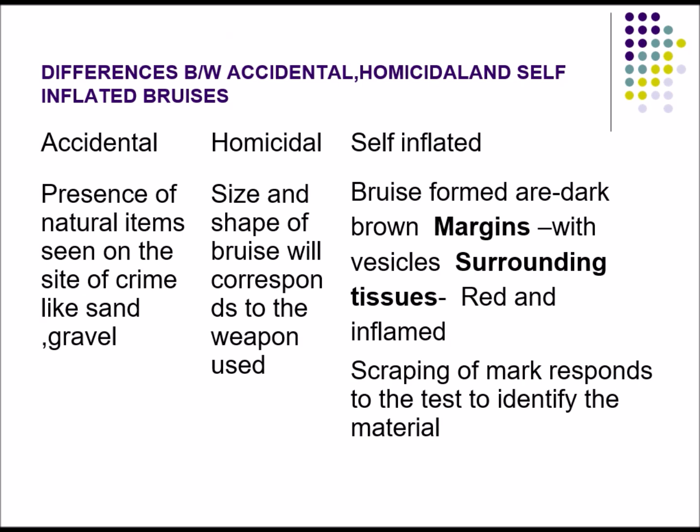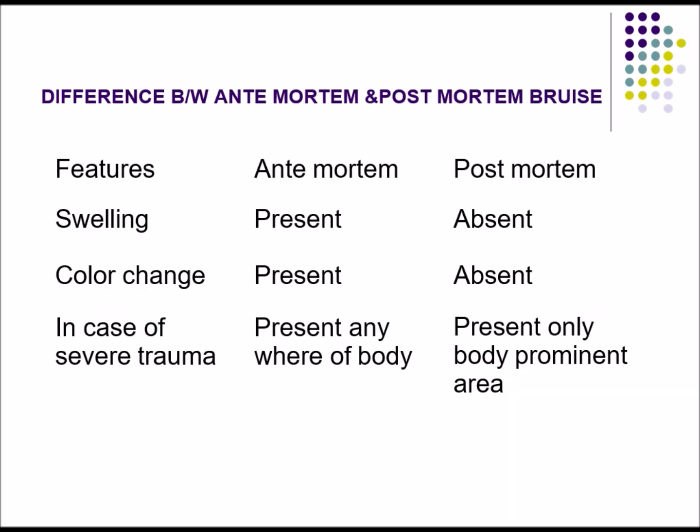Differences between accidental, homicidal, and self-inflicted bruises: accidental bruises show presence of natural items from the crime scene like sand and gravel; homicidal bruises have a size and shape corresponding to the weapon used; self-inflicted bruises show dark brown margins with vesicles around the margin and surrounding red, inflamed tissue. Scraping marks from the bruise help identify the causative material.